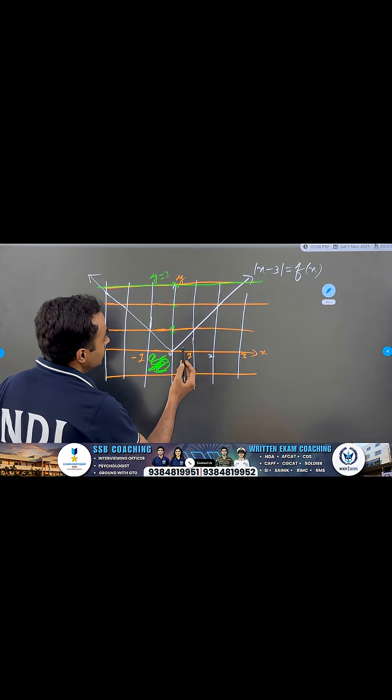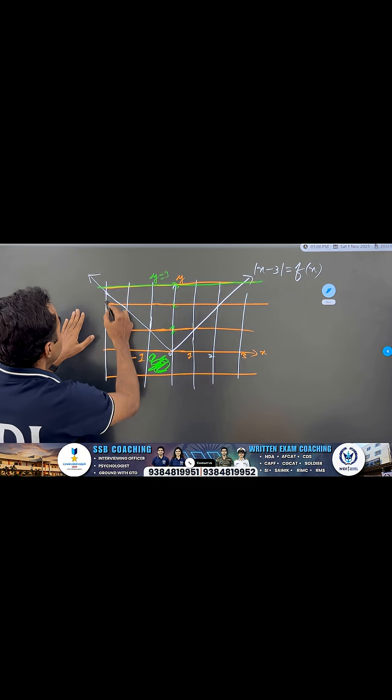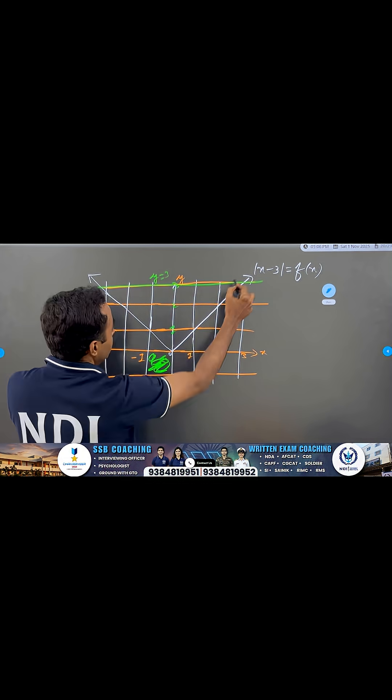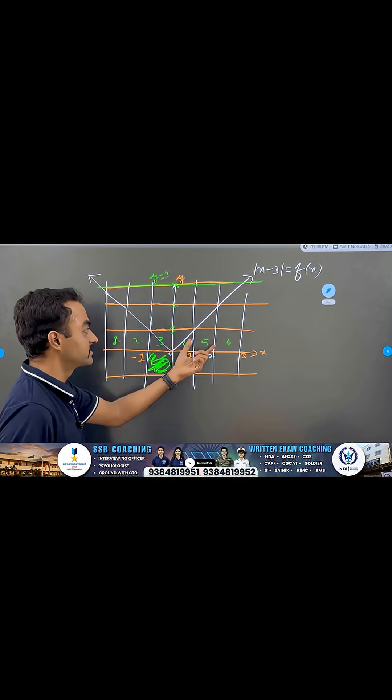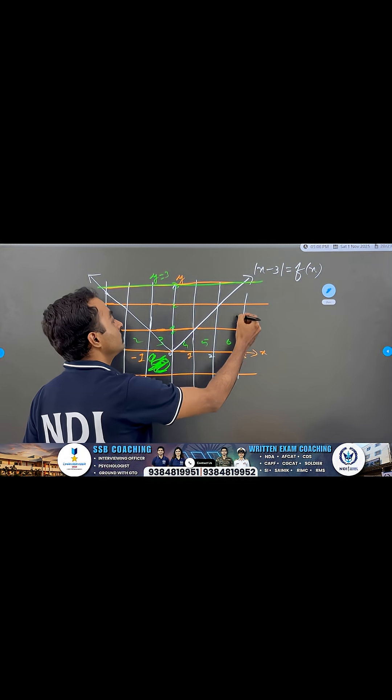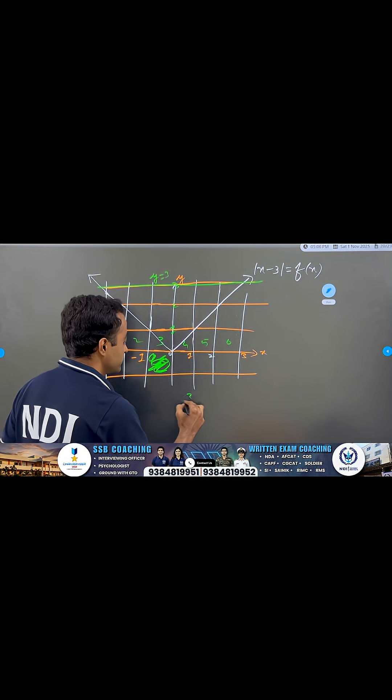Now, let us say that what is the total area? If I want to find this total area, I have to calculate 1, 2, 3, 4, 5, 6. There are 6 grids and I have 1, 2, 3. So, 6 into 3 that is 18.